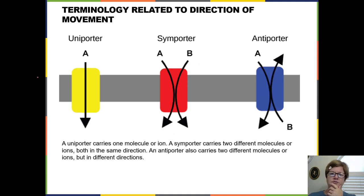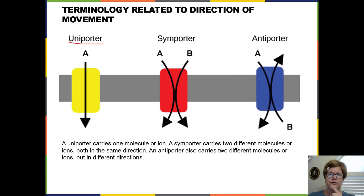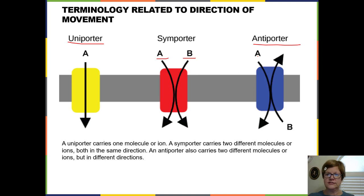There's also terminology related to direction of movement. If a protein moves only one thing across the membrane, it's called a uniporter. If it moves two different molecules in the same direction, that's symport. If it moves two different molecules in opposite directions, that's antiport. So: uniport = one item, one direction; symport = two molecules, same direction; antiport = two molecules, opposite directions.